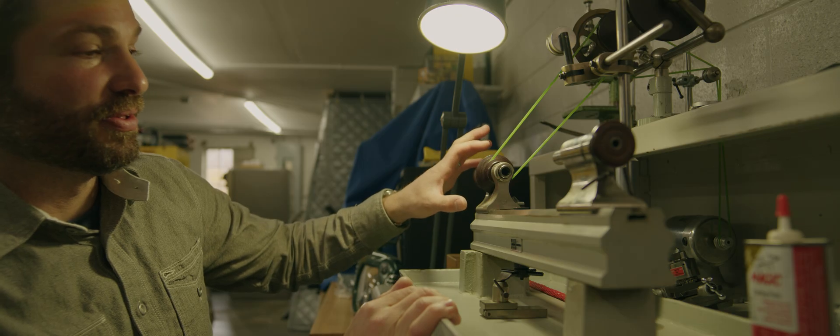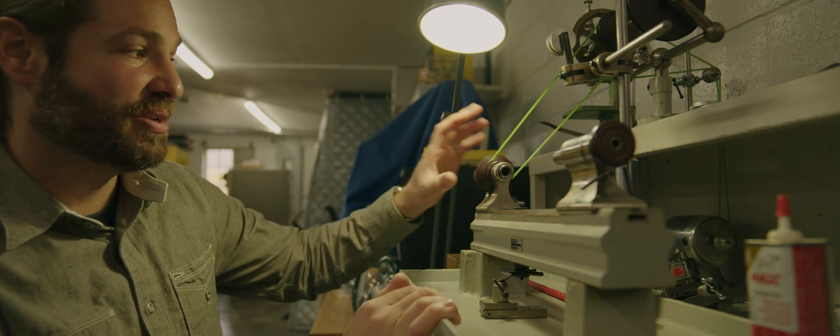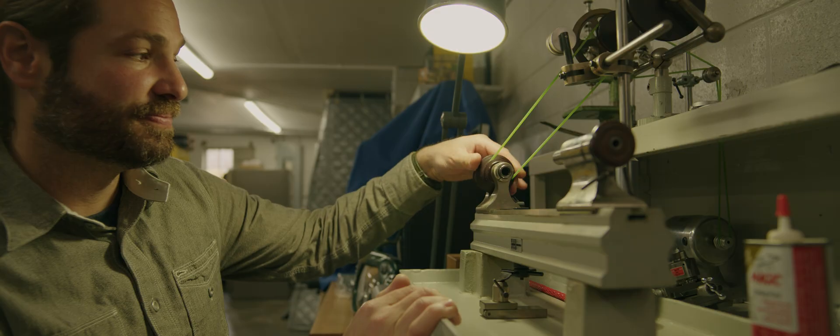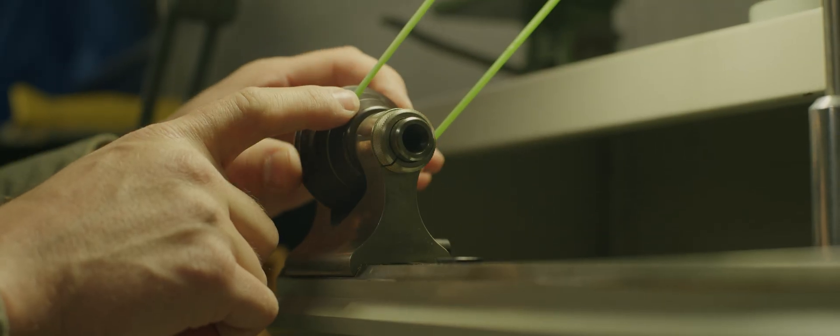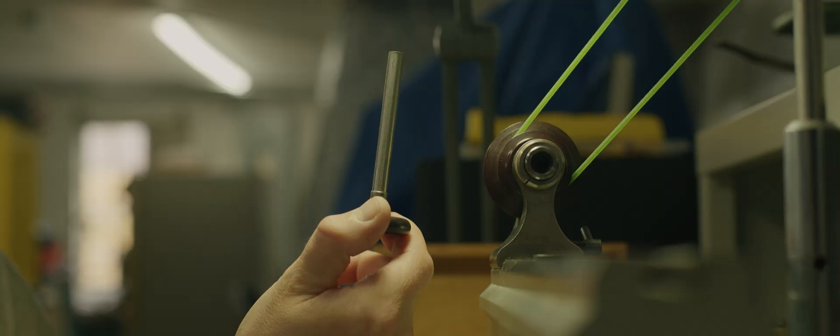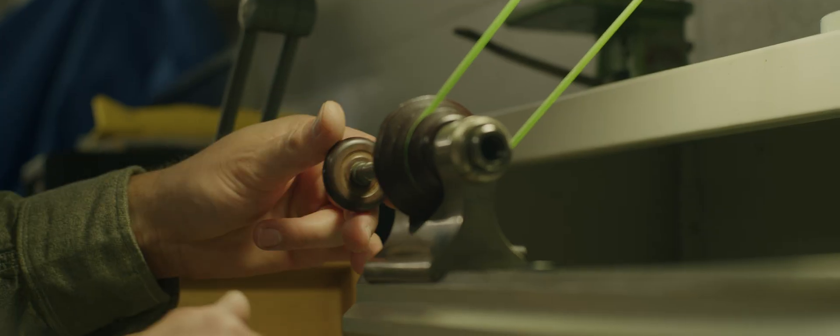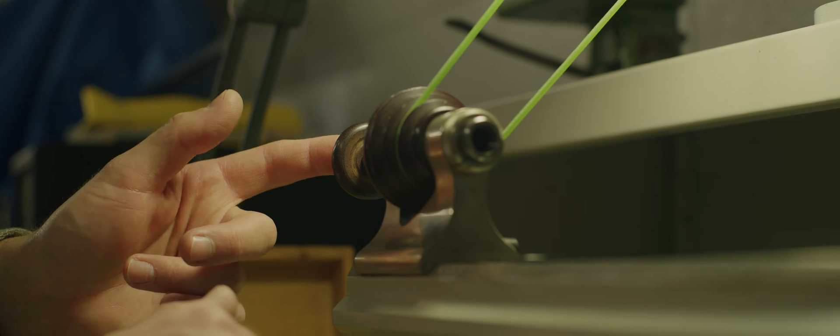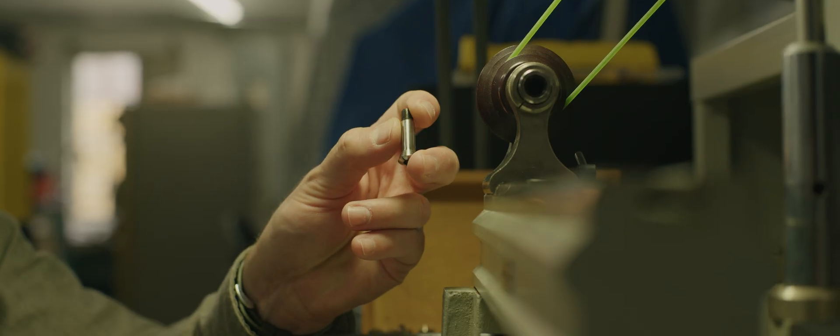On a lathe you've got the bed, which on this particular lathe is right here. The first thing that you have to have on the bed is the headstock. The headstock will have a pulley on it that will spin. You'll have a draw bar which is what draws a collet into the headstock when you tighten it down. The collet is what will hold your material. For this lathe we have one of these collets, and this is an eight millimeter collet.